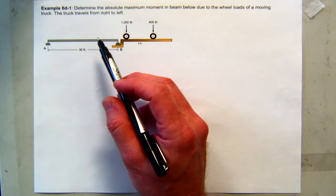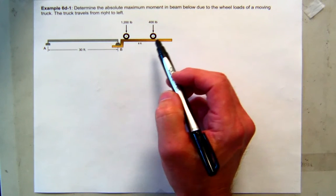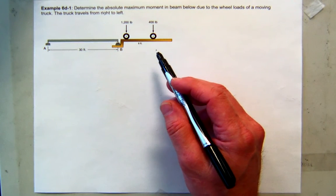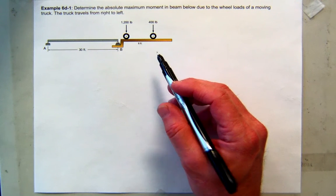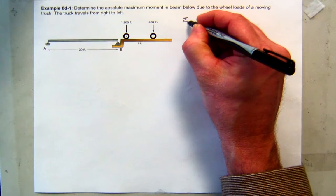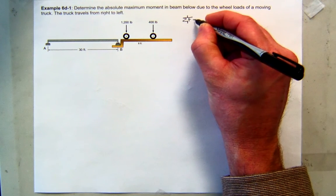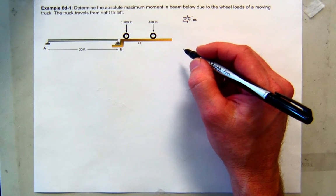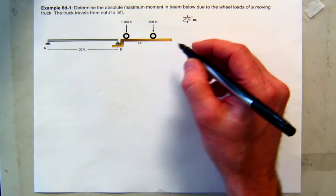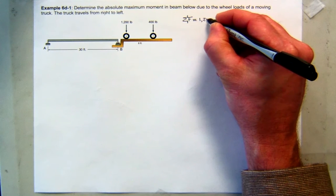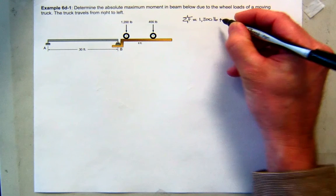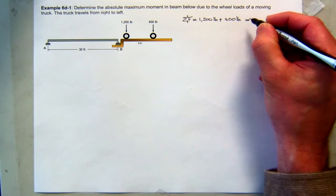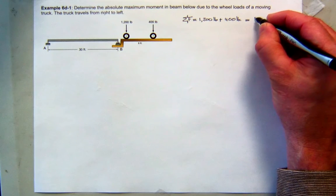When we work on the absolute maximum moment, the first step is to find the resultant force of all applied forces. That's pretty easy — we simply sum the forces. This is not an equilibrium equation; we just want the equivalent resultant force. So 1200 pounds plus 400 pounds gives us a resultant of 1600 pounds.